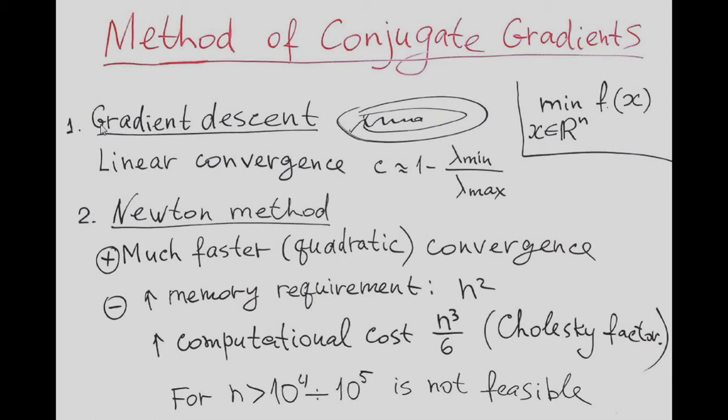Gradient descent is the simplest and basic method when we just go in direction of minus gradient with certain step size, compute gradient in new point and continue so on.